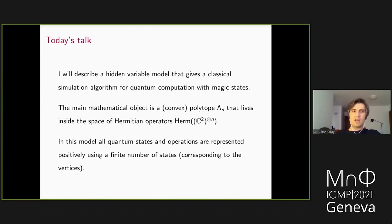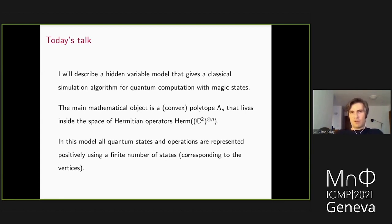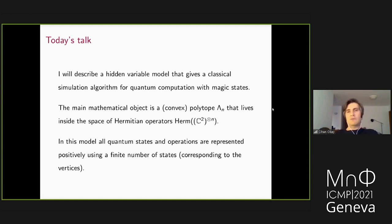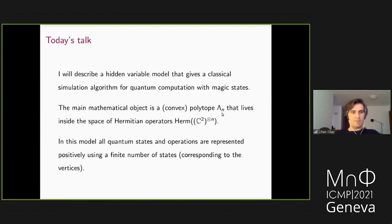In this model, all quantum states and operations are represented positively using a finite number of states corresponding to the vertices of the polytope. Positivity here means quasi-probability representations become actual probability representations. For context: the Gottesman-Knill theorem says any stabilizer circuit is efficiently classically simulatable, and Veitch et al. generalized this to odd-dimensional Hilbert spaces using Wigner functions — but that result doesn't apply to qubits.